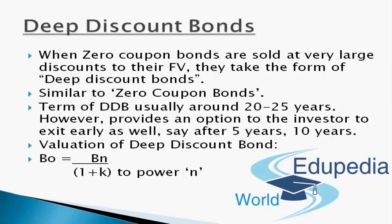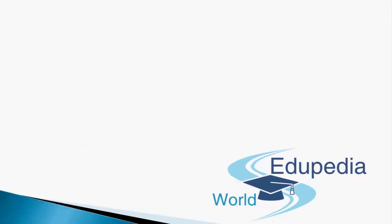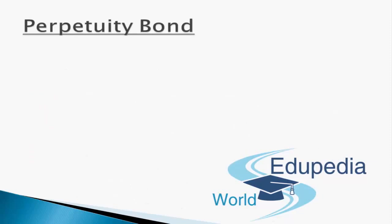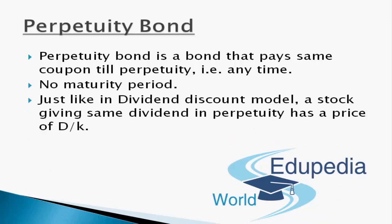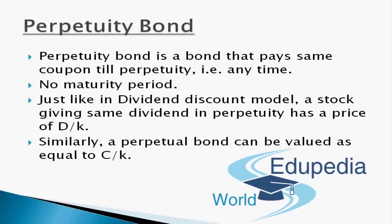Now let's quickly jump on to another topic: perpetuity bonds. A perpetuity bond is a bond that pays the same coupon interest rate in perpetuity — it has no maturity period. We have seen in the dividend discount model that a stock giving the same dividend in perpetuity has a price of D/K, and similarly a perpetual bond can be priced and valued as C divided by K. That covers zero coupon bonds, deep discount bonds, and perpetuity bonds.